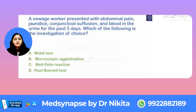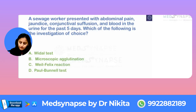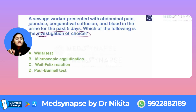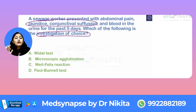Next question — when you do not know the answer, how will you guess? Which of the following is the investigation of choice? Always read the last line first in lengthy questions that are not one-liners. A sewage worker is given with abdominal pain and jaundice.